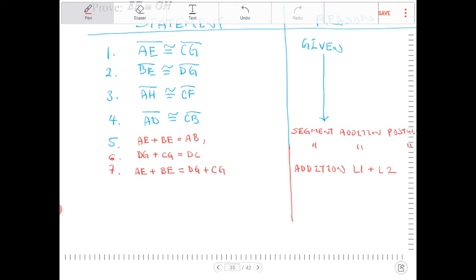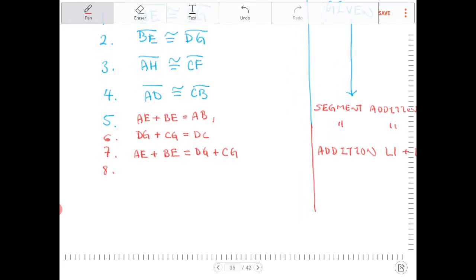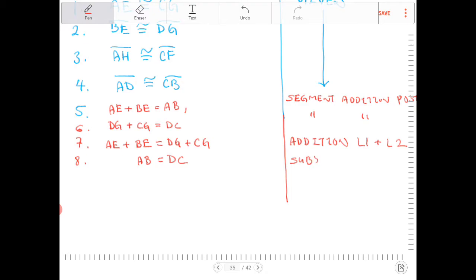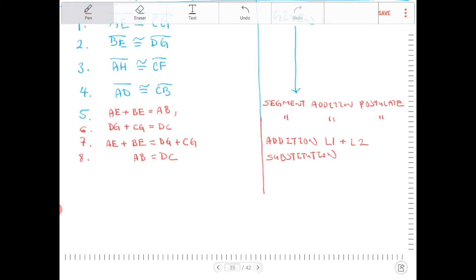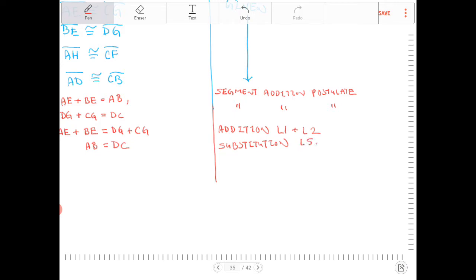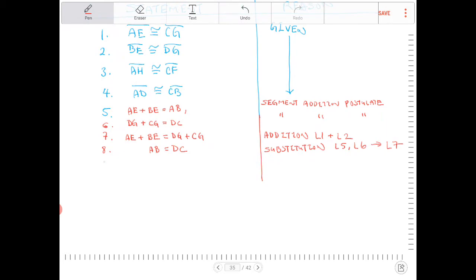If I take line 1 and line 2 and treat them as their equations, I will end up with line number 7. And then because line 5 and line 6, AE plus BE is equal to AB, I'm going to replace the left side of statement number 7 with AB. And because of line number 6, DG plus CG is DC, I'm going to replace the right side of statement number 7 with DC. And the reason for this is substitution. So between lines 5, 6, into line 7.